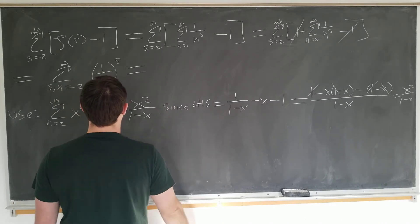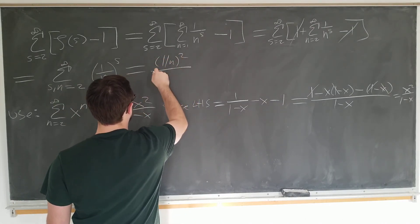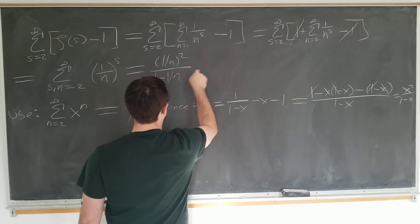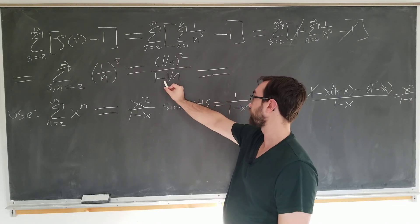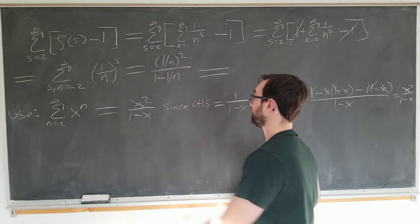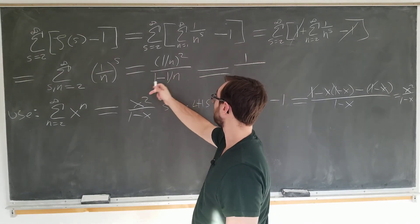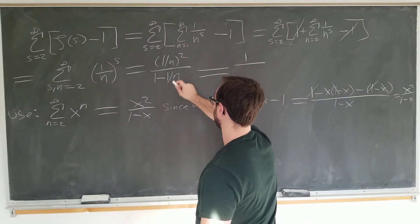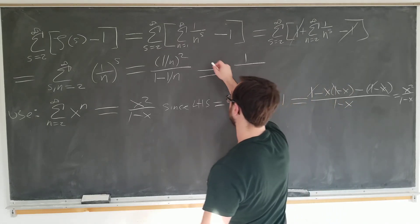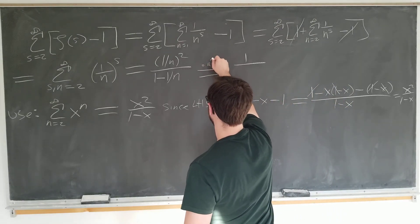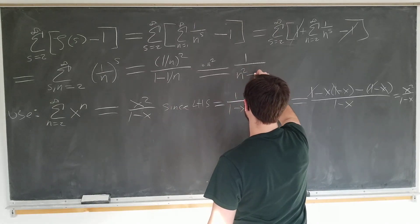This becomes 1 over n squared over 1 minus 1 over n. And now we just want to take the 1 over n squared downstairs to become 1 over... This becomes multiply top and bottom by n squared: 1 over n squared minus n.